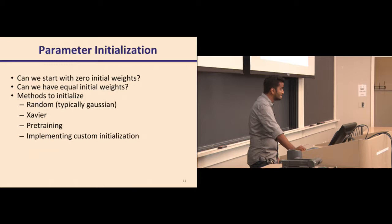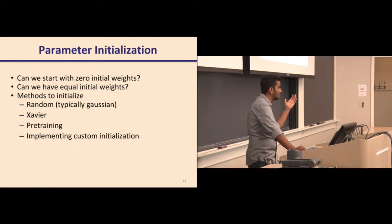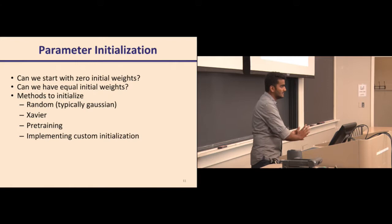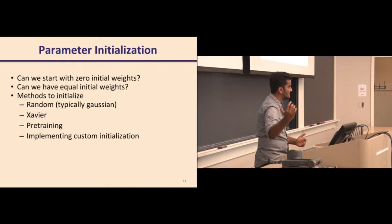Exactly — every neuron tends to be identical. More importantly, in a multi-layer perceptron, you multiply input X by the weight matrix, add a bias, and apply an activation function. If weights and biases are zero, WX + B = 0 regardless of the input. That zero is fed into the next layer, which is again multiplied by zero plus zero, and so on. For the first batch, everything is zeros.